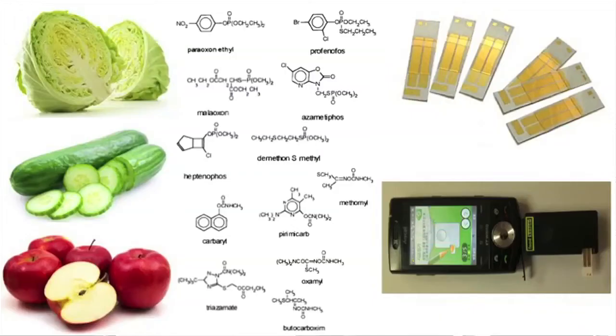We eat vegetables and fruits every day, and you probably did it today too. Sometimes these are contaminated with toxic agri-chemicals, which is not good. Can we test it? Well, yes, you can do it. By using nanotechnology, you can make a very inexpensive disposable chip which has immobilized enzymes that can detect such toxic agri-chemicals.